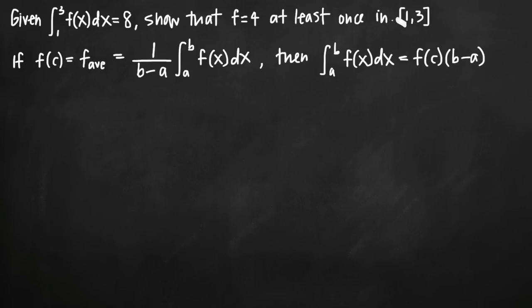And b and a are identified in the interval here 1 to 3, so a is 1 and b is 3. Really all the formula is telling you is that there's a point c where the value of the function is the same as the average value of the function on that range. That's all it means.